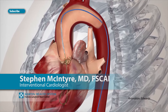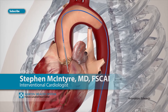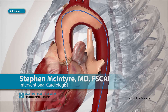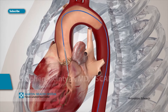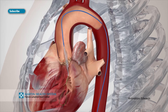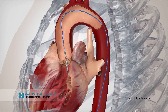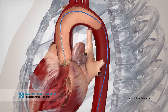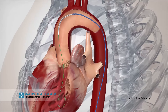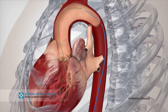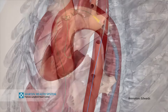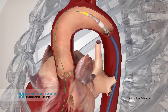The TAVR procedure involves accessing arteries in the legs and going up the aorta and crossing the aortic valve, which is the sick valve in this case. You cross it with a wire and you work over that wire.